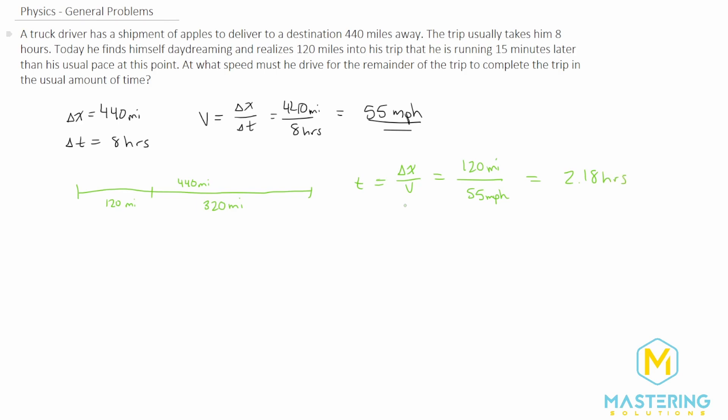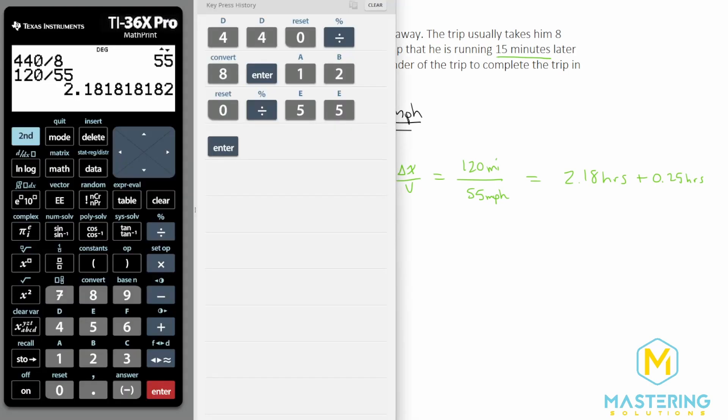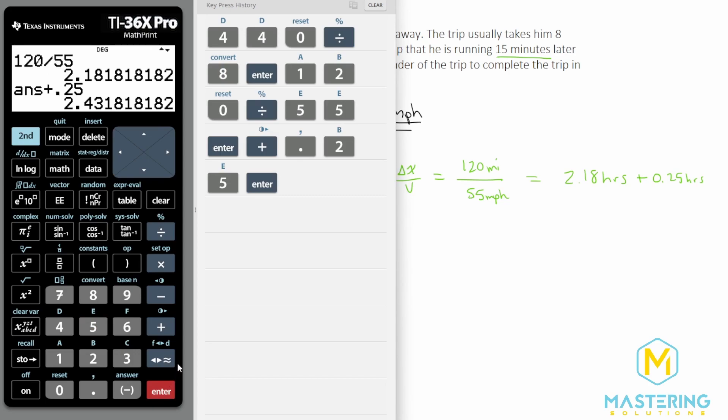But they say in the trip that this time it's taking him 15 minutes longer than he usually is. So 2.18 plus a quarter of an hour. So plus 0.25 hours. I'm going to leave it as the not rounded answer right here, just so it's more precise. So we have 2.43 with all this. So we'll actually do the 2.43.